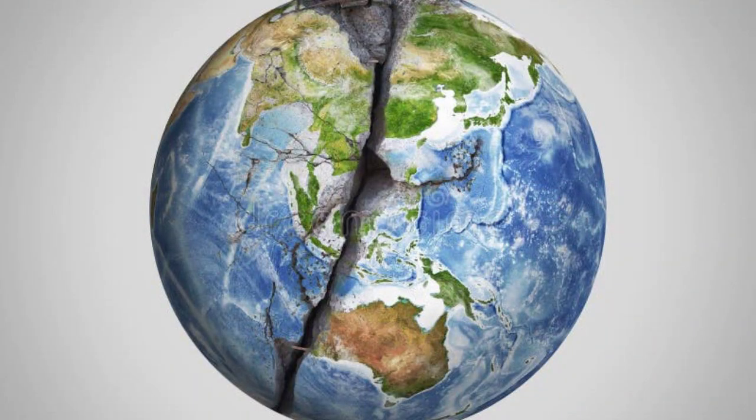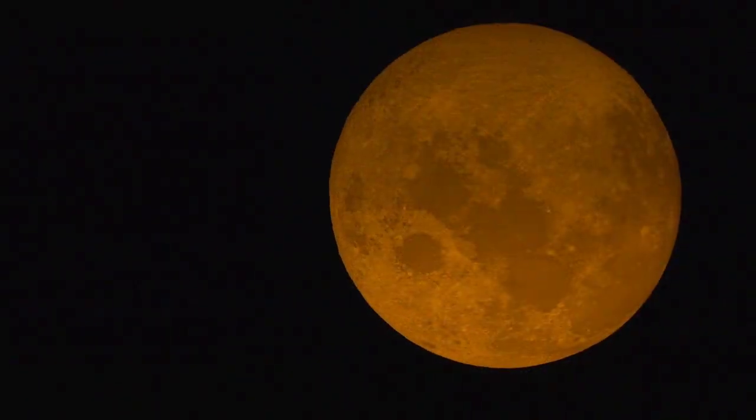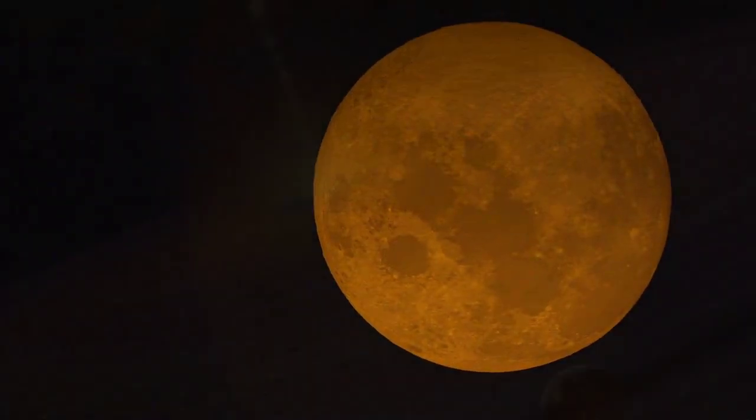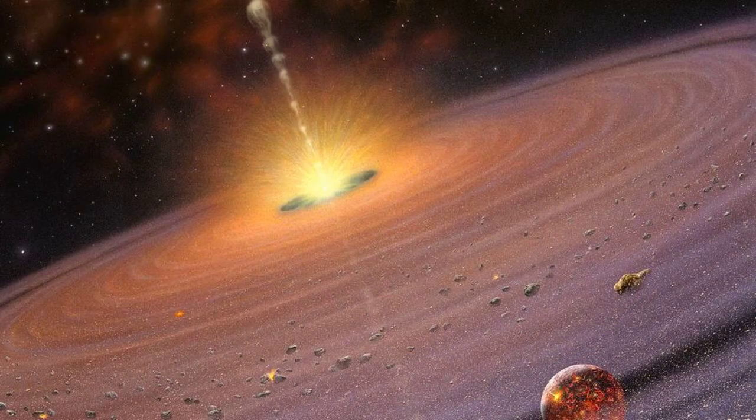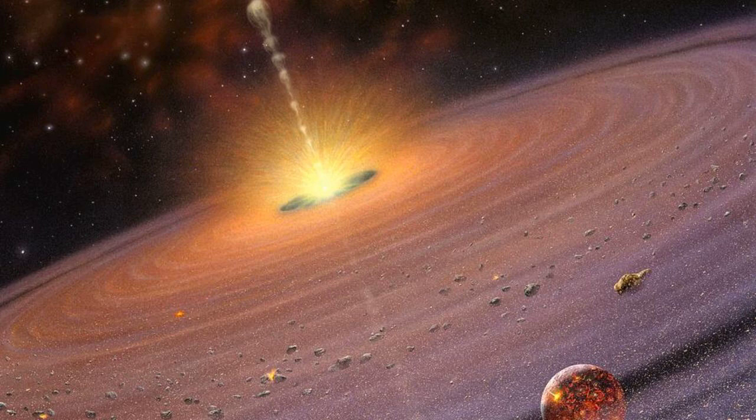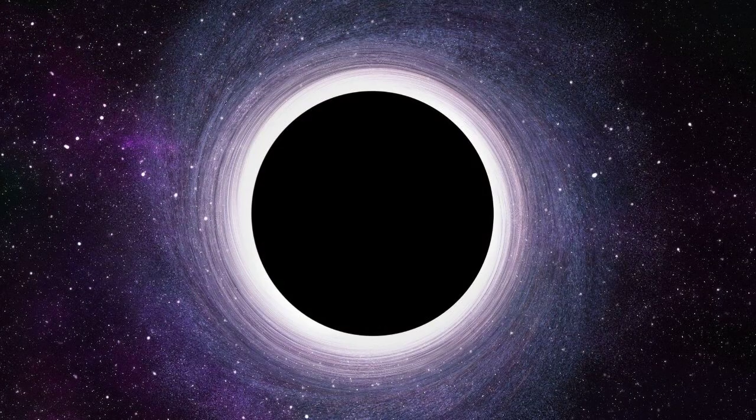Eventually, Earth would crack into pieces, or maybe in the best case scenario, be unceremoniously ejected from the solar system. Well, the reality is you and everything on our planet would be pulled right into the accretion disk along with all the other matter in our solar system. So now you'd have a new front-row ticket to the black hole.